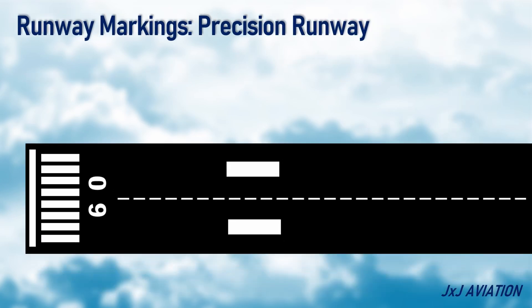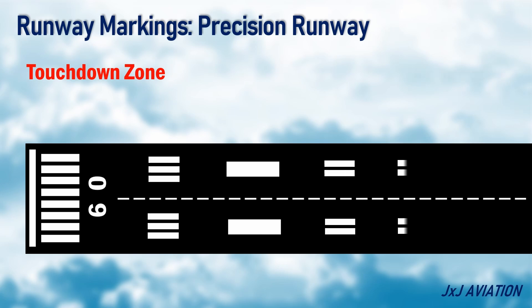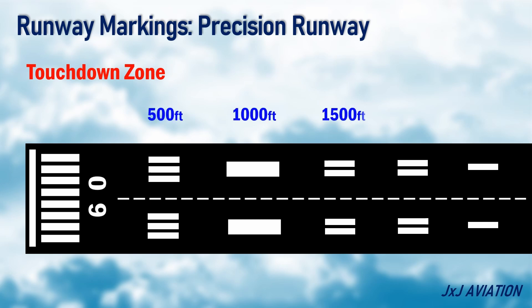In addition to these markings, a precision instrument runway will also have touchdown zone and side stripe markings. The touchdown zone markings are thin white stripes which identify the touchdown zone for landing. The stripes have a spacing of 500 feet. These markings consist of a group of 1, 2, and 3 stripes on both sides of the runway centerline.